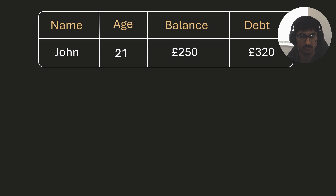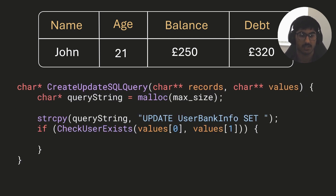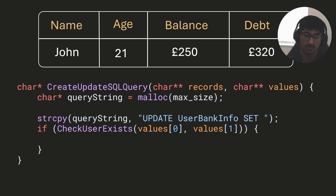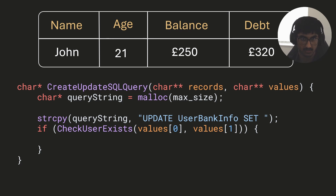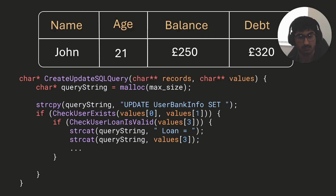If you aren't familiar with SQL, this will be a simple introduction. We've got a function called `create_update_sql_query` that takes an array of records and creates an array of new values. I allocate a query string to hold the SQL query I'm building, then copy in 'UPDATE user_bank_info SET', searching for the user with name and age — values at index 0 and 1. Then we do conditional checks: if the user is getting a loan, we check their balance-to-debt ratio before updating the query string with the new debt value.